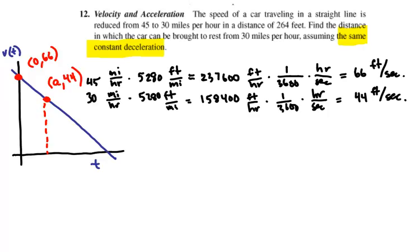So we go from 45 miles an hour to 30 miles per hour, or 66 feet per second to 44 feet per second. We don't know how much time that takes, but we do know that we cover a distance of 264 feet, and that there is a constant deceleration.